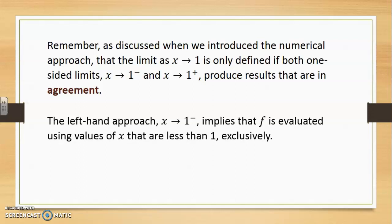The left-hand approach, x heading towards 1 minus, implies that f is evaluated using values of x that are less than 1 exclusively. To the left of 1, the function's definition is in fact x squared plus 2x. This is a polynomial for which direct substitution can be applied, and this is how a result of 3 is obtained.